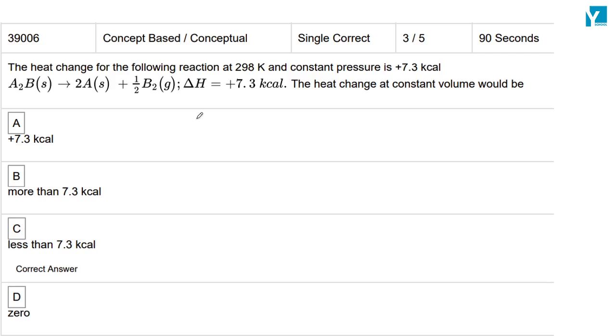What will happen at constant volume? We know very well delta H is the heat change at constant pressure, delta U is the heat change at constant volume, and we have delta n_g RT which is equal to half RT.